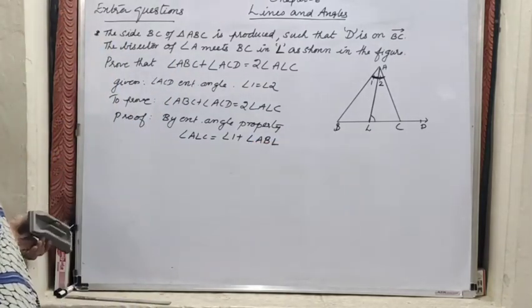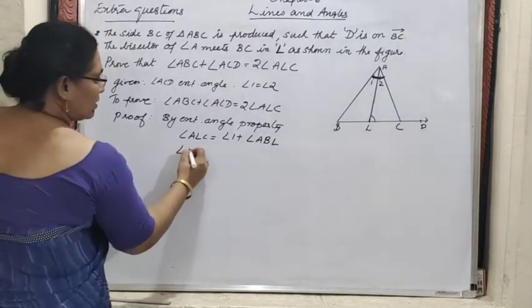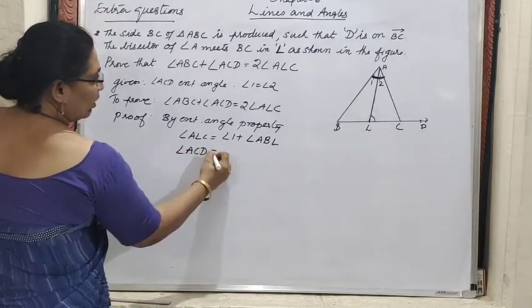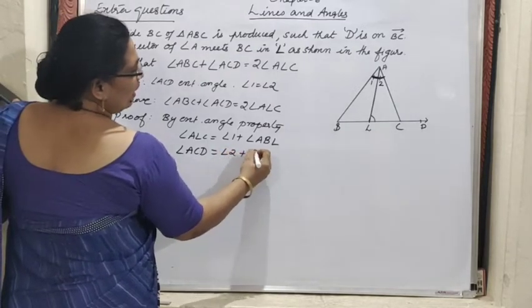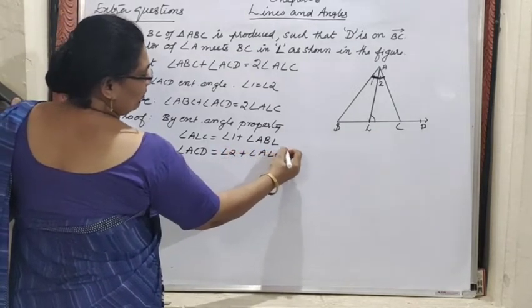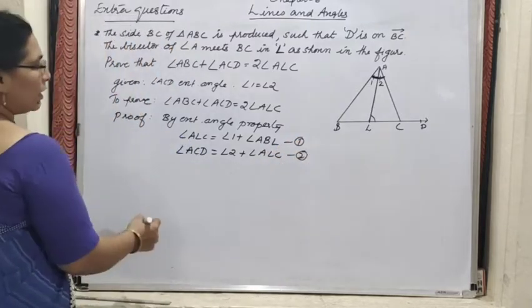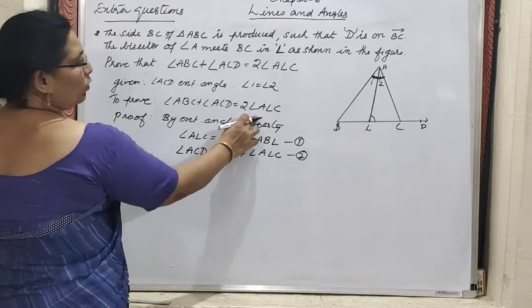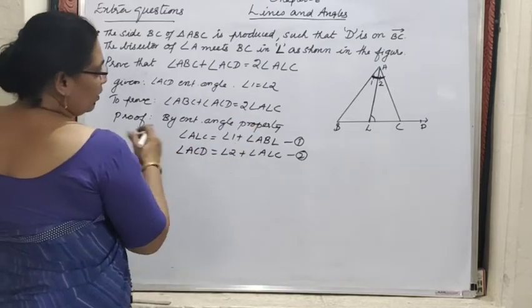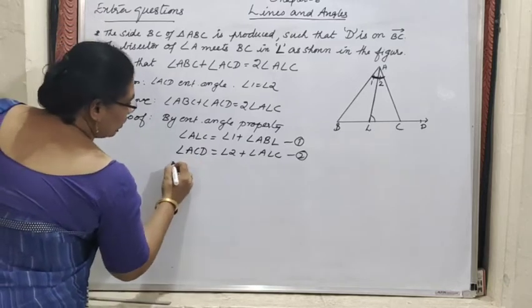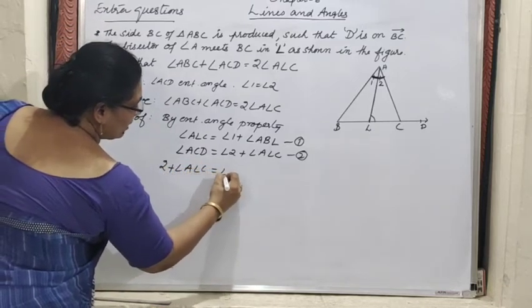Now if I consider angle ACD — angle ACD is also an exterior angle only. So I can write angle 2 plus angle ALC. So this is equation 1, and this is equation 2. But here I have to get 2×ALC, so I am bringing ALC to this side.